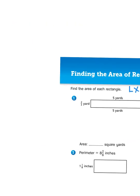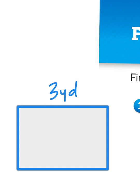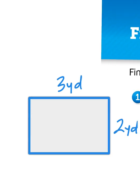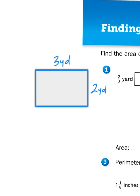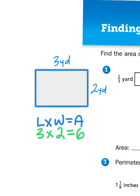If I were to solve that with a normal rectangle that has whole number measurements, it might look something like this. Let's say I have a rectangle that is 3 yards long and 2 yards wide. I would apply that formula — length times width equals area — and multiply the length, which is 3, times the width, which is 2, and that gives me 6 square yards.